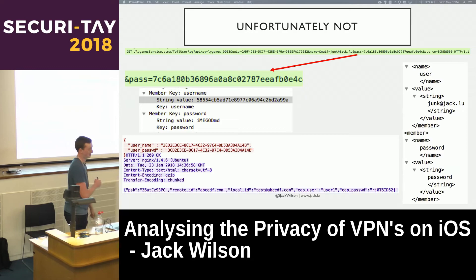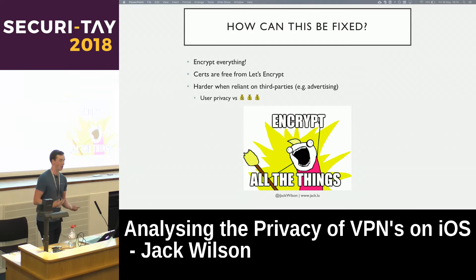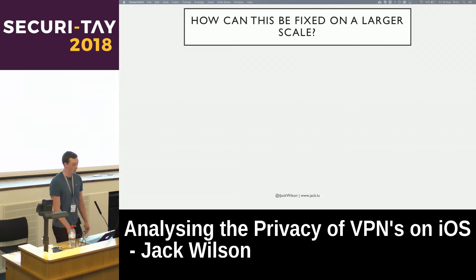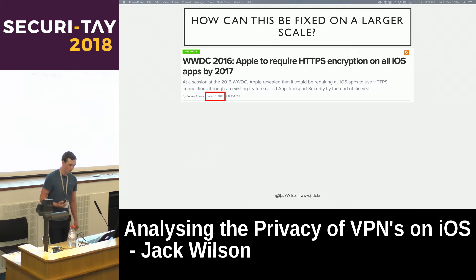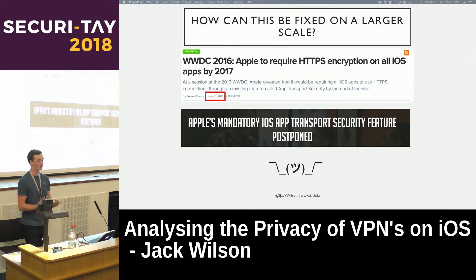So how can this be fixed? Encrypt everything — it's fairly simple. Certificates are free from Let's Encrypt and easy to configure. That's fine if you own your own infrastructure, but if you're dependent on third-party ad services, that's not as easy, and it comes down to VPN developers evaluating user privacy versus how much money they'd like to make. On a larger scale, Apple announced at WWDC 2016 they would enforce mandatory transport encryption so every app would need to encrypt all traffic — then they postponed it. Apple really needs to enforce mandatory transport encryption with a definitive date.